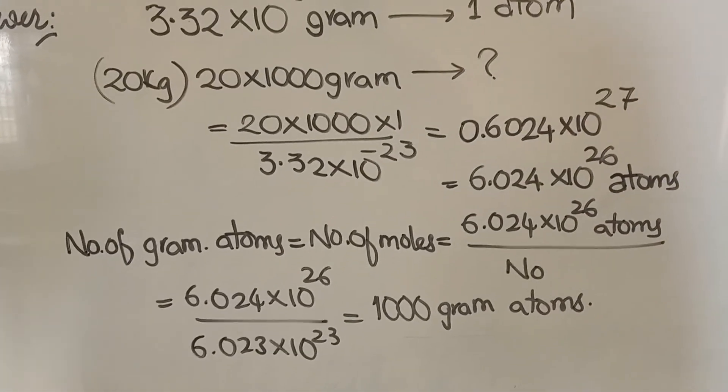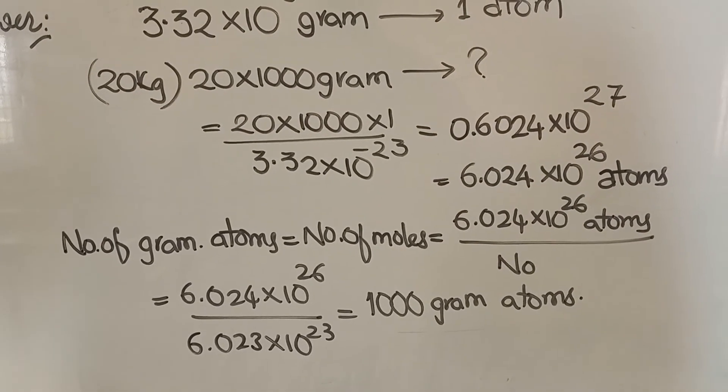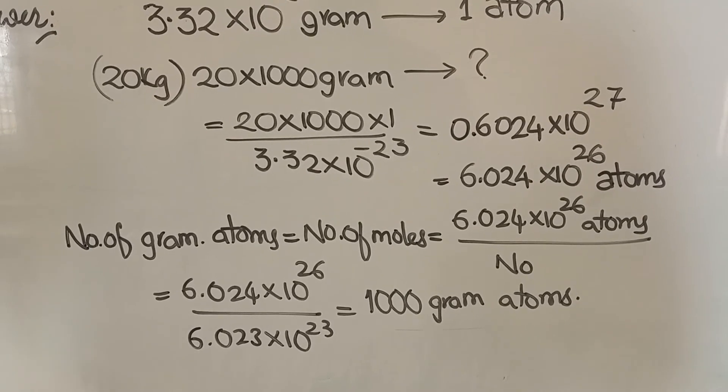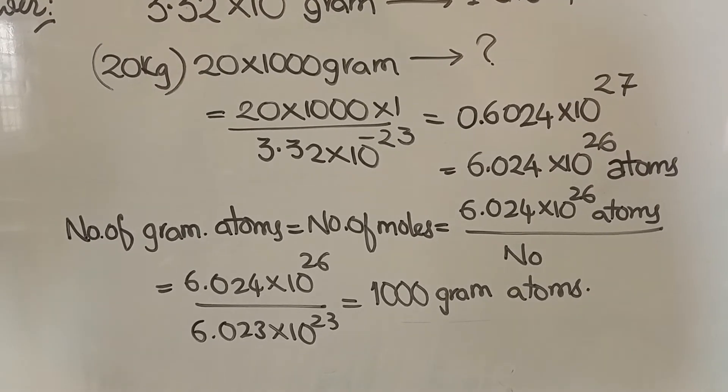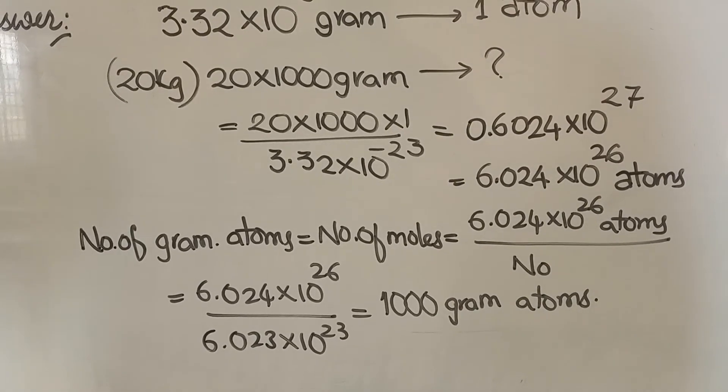Then, we know how to find the number of moles. Number of moles is equal to number of atoms by Avogadro number. Number of atoms we got here, 6.024×10^26, by Avogadro number is 6.023×10^23.